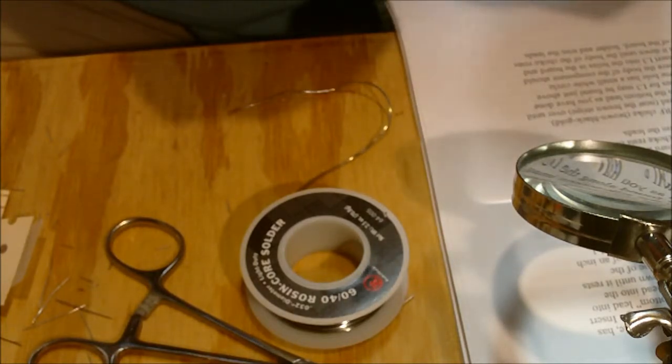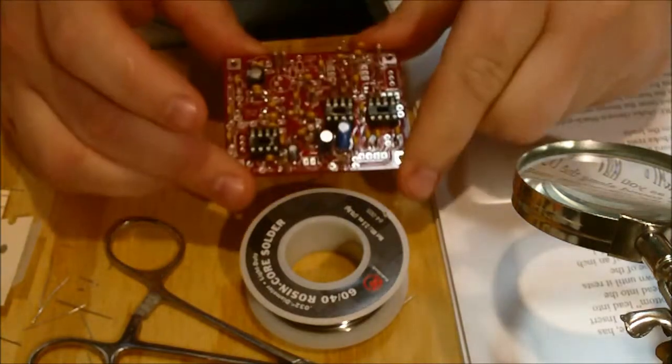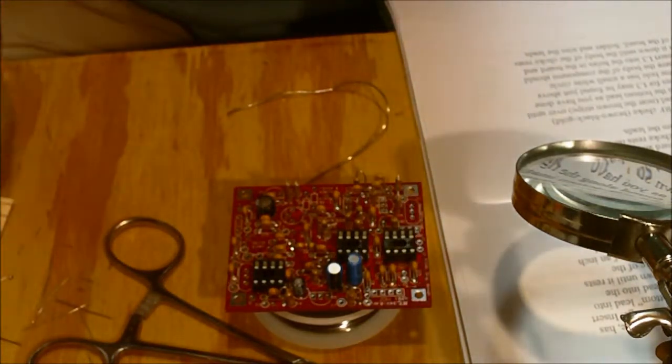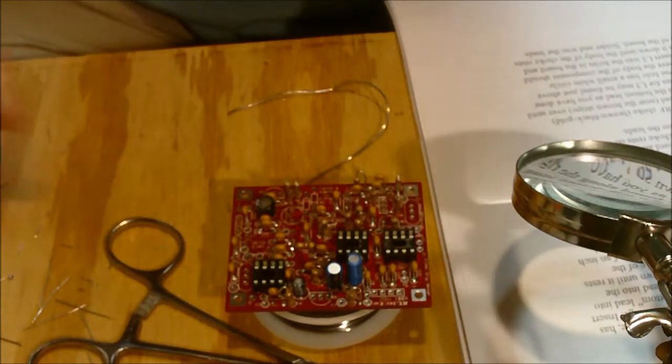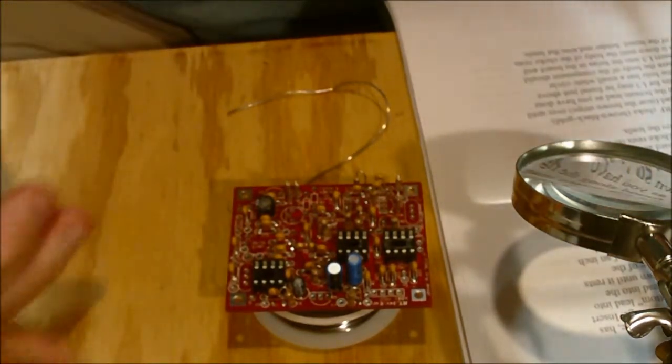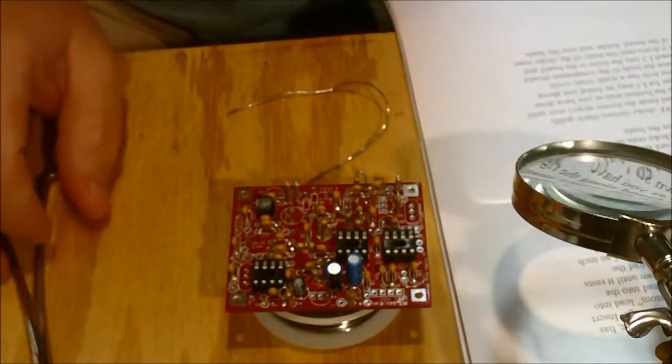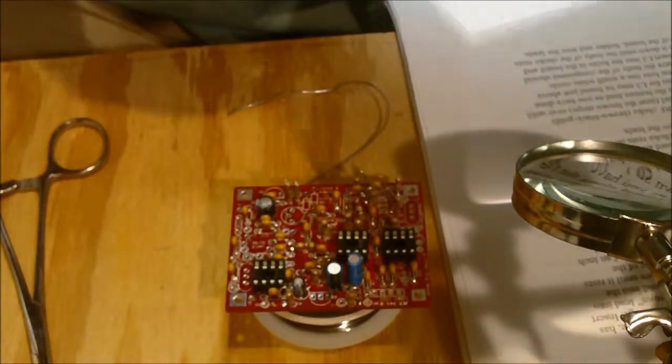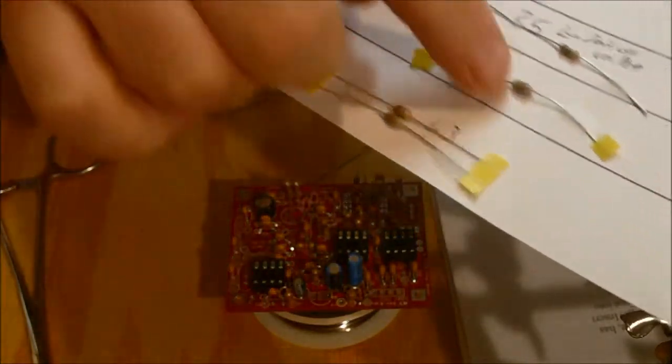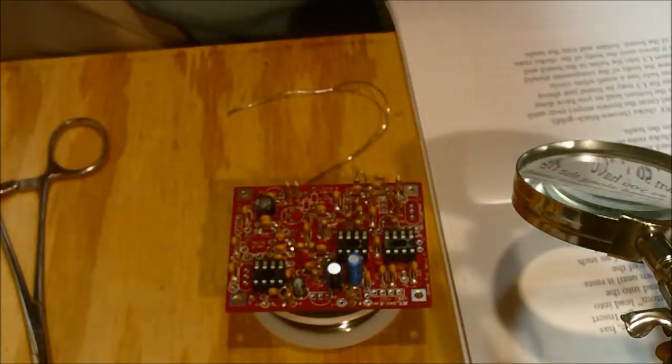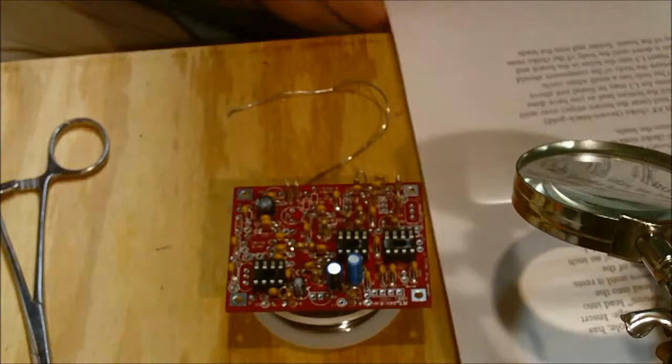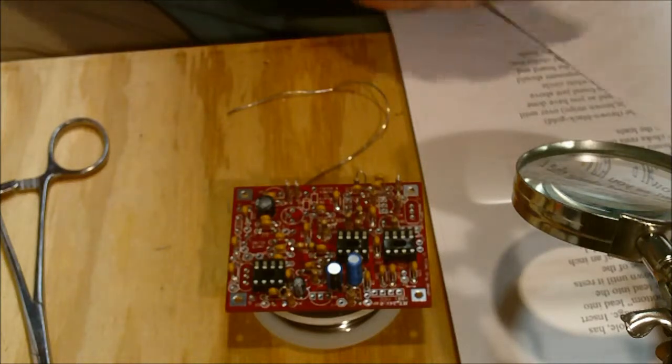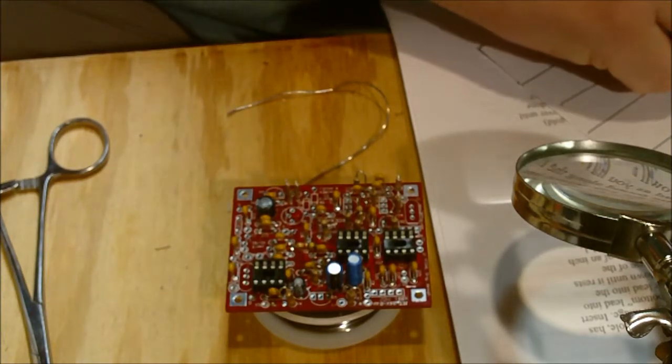So part four, or phase three here, is the assembly of the diodes and the RF chokes. And I have my RF chokes on my resistors page because they've basically labeled and look a lot like resistors. So we'll start on this one, L1, which is a 10 microhenry RF choke.